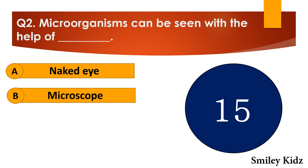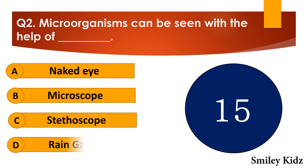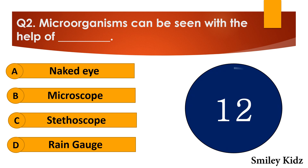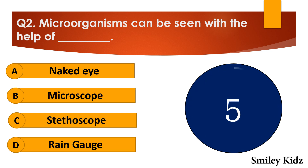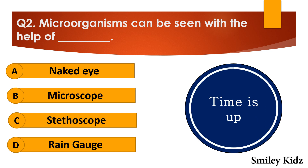Question number two: Microorganisms can be seen with the help of dash. The options are: A. Naked eye, B. Microscope, C. Stethoscope, or D. Rain gauge. Your time starts now. Your time is up and the right answer is option B — microscope. Microorganisms can be seen with the help of a microscope.